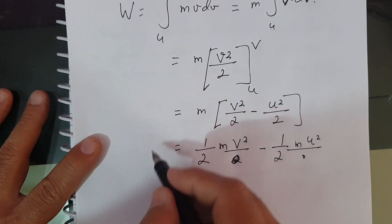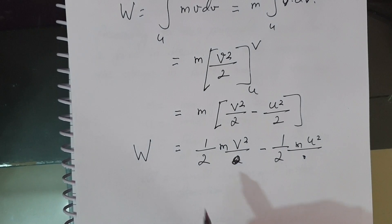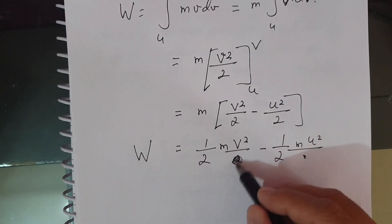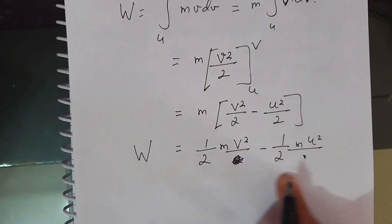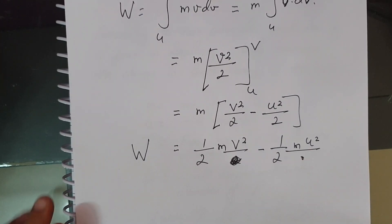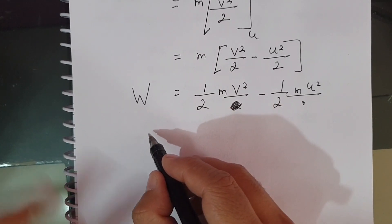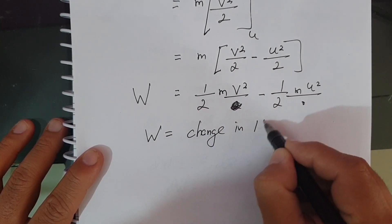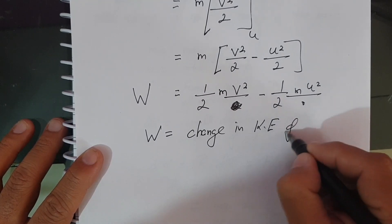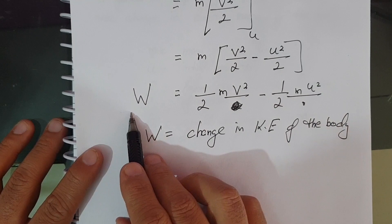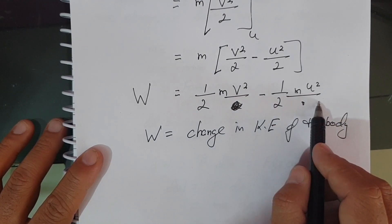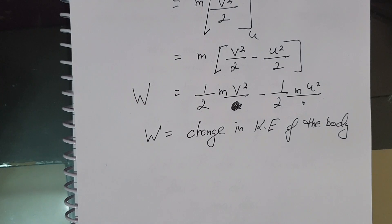So the total work done is W = ½mv² − ½mu². Here ½mv² is the final kinetic energy and ½mu² is the initial kinetic energy. Therefore W equals the change in the kinetic energy of the body, which is final kinetic energy minus initial kinetic energy. This proves the work-energy principle.